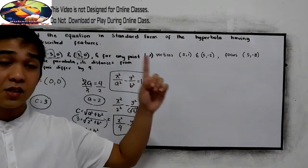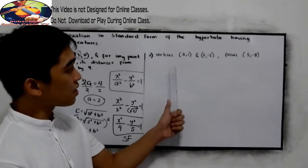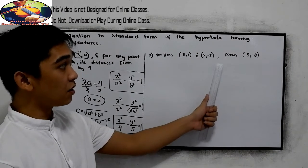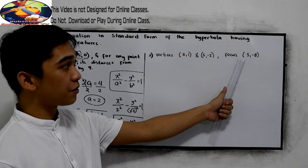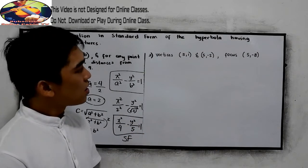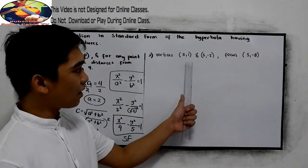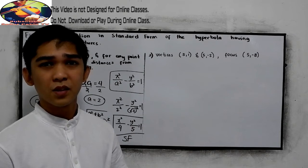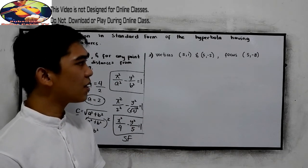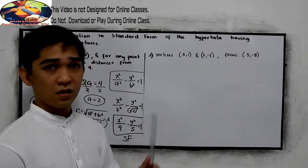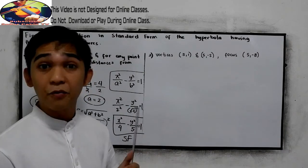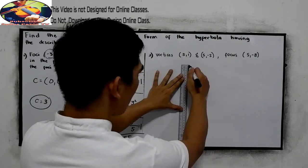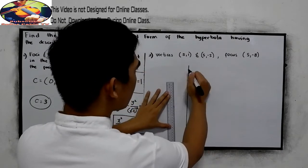Let us proceed with example number 2. The vertices are (5, 1) and (5, -5), and the focus is (5, -8). Notice that our center is at (h, k). To solve this, we can graph first so that we can find the values of a, b, and c.